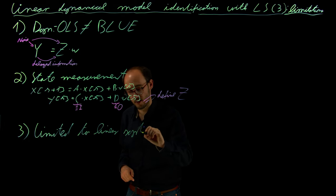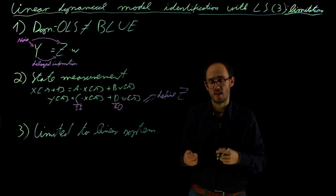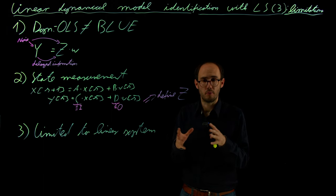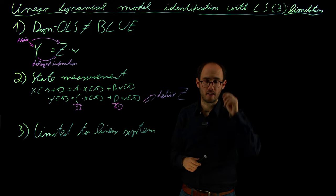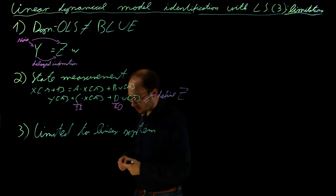However, in reality, linear system representations are always just a simplification over some operating points, over some little part of the operating space of a certain system. So in reality, we normally have nonlinear systems.